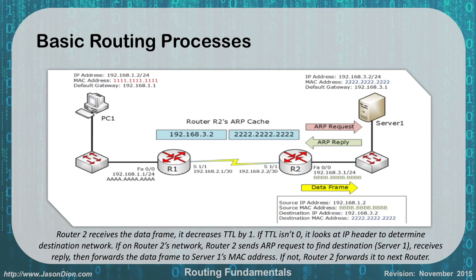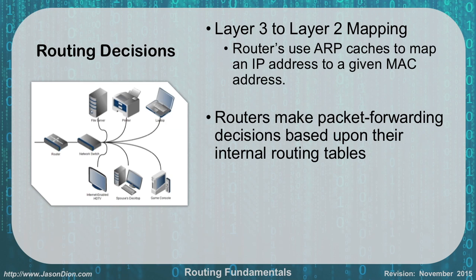So essentially what we did was go from PC1 to router one — we had to go from layer three down to layer two to do it via switching. Once it gets to the router, it goes back up to layer three over to router two. Once it gets to router two, it goes back down to layer two with switching to get over to server one. Routers are really focusing on layer three to layer two mapping, using ARP caches to map IP addresses to a given MAC address inside their network.